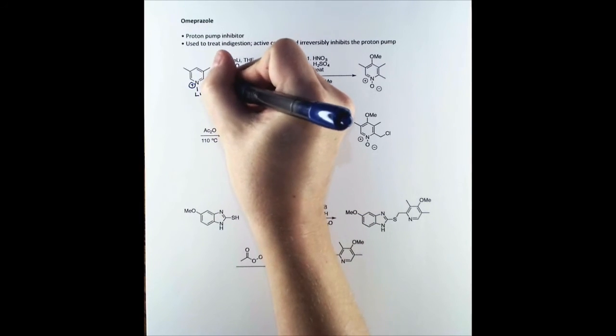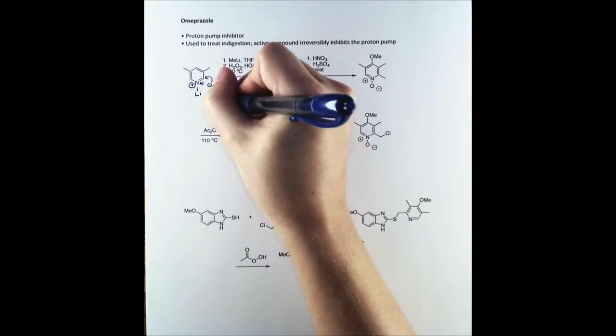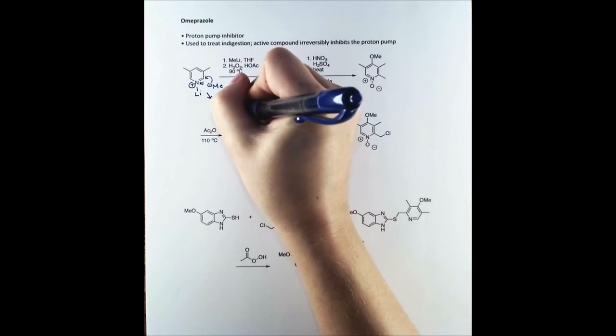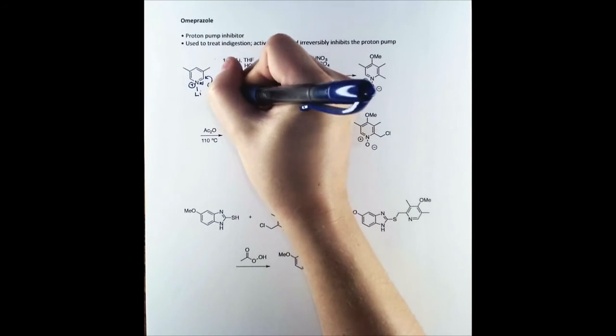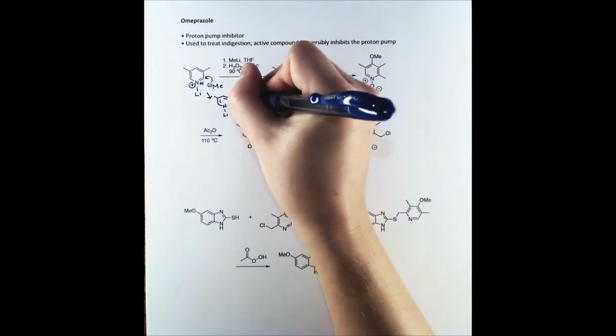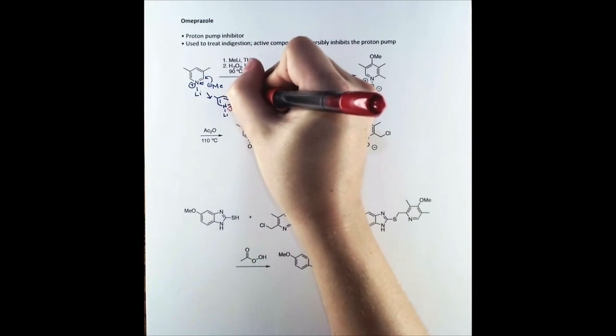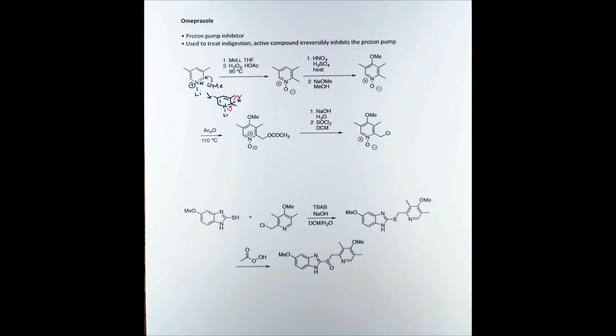It starts with pyridine, and we do a nucleophilic attack on pyridine by activating with methyl lithium. So we get coordination of the lithium, attack by the methyl group, and then elimination of hydride, similar to the Chichibabin reaction.